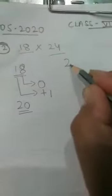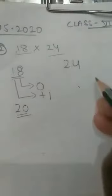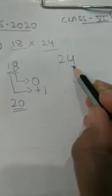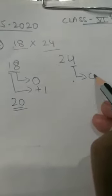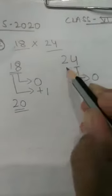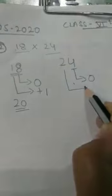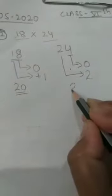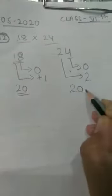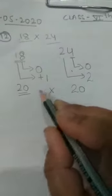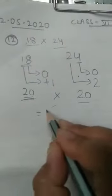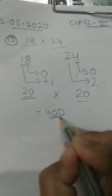Now round off 24. We consider the digit at the ones place — it is less than 5, so it is replaced by 0 and there is no increment at the tens place. So 24 stays as 20. Now multiply both: 20 into 20, that is 400. Answer: 400.